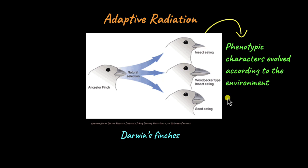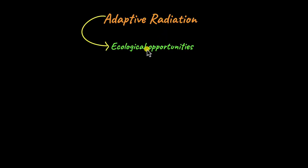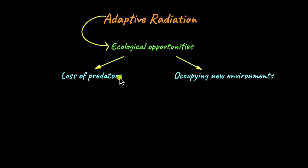But how exactly does adaptive radiation work? Adaptive radiation works because of the formation of new ecological opportunities. The Galapagos is a set of islands, so when the ancestral finches migrated from one island to another, they were faced with new ecological opportunities in the new islands. Examples of ecological opportunities include the loss of predators and occupying of new environments.